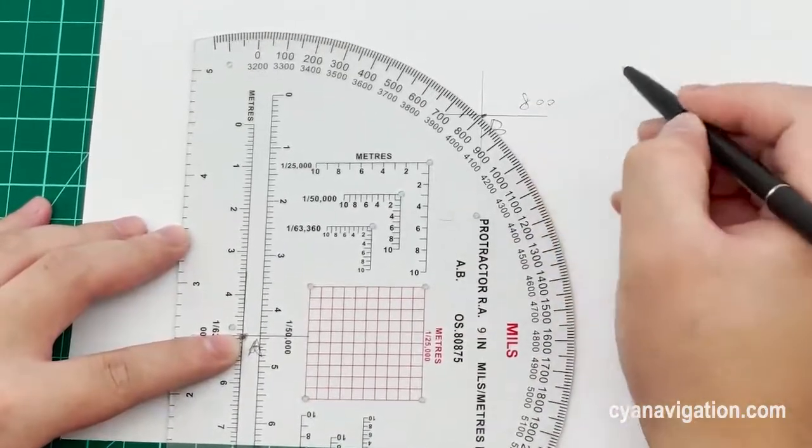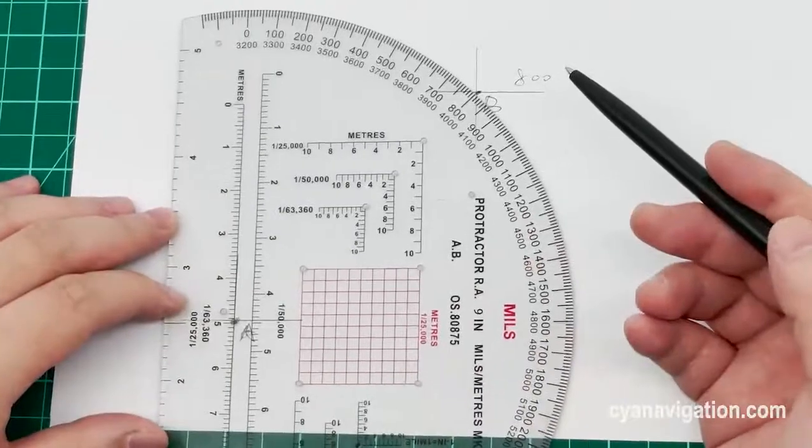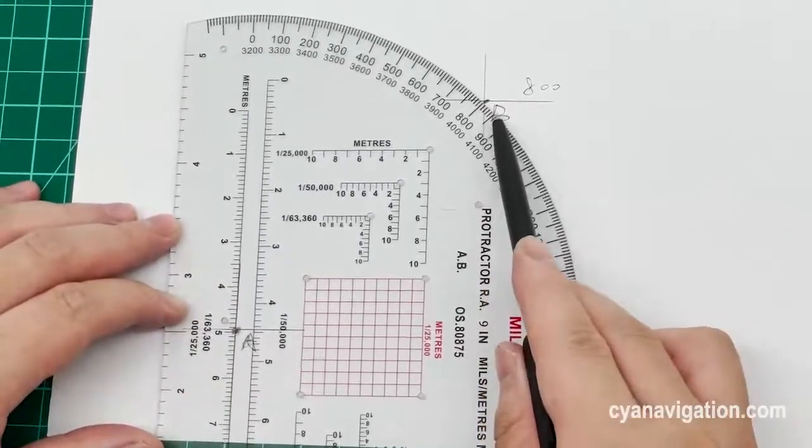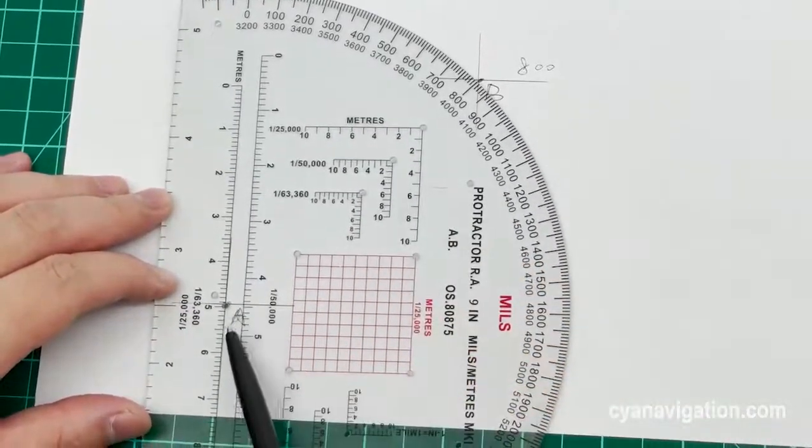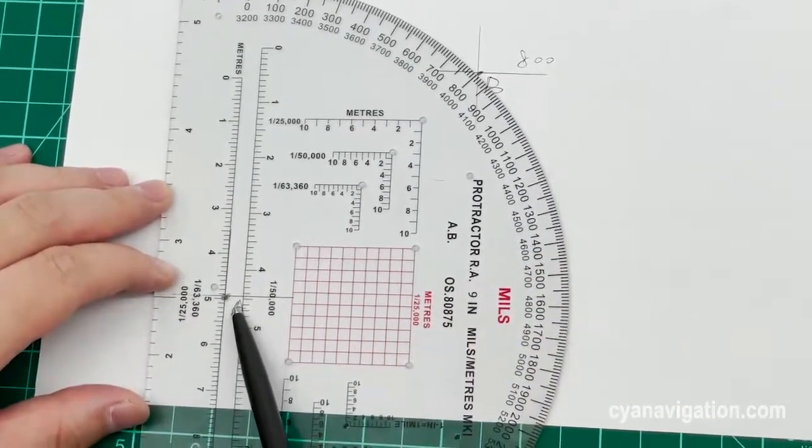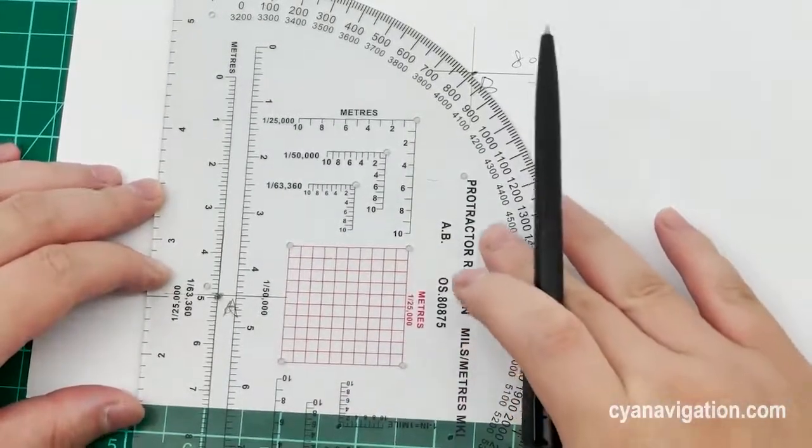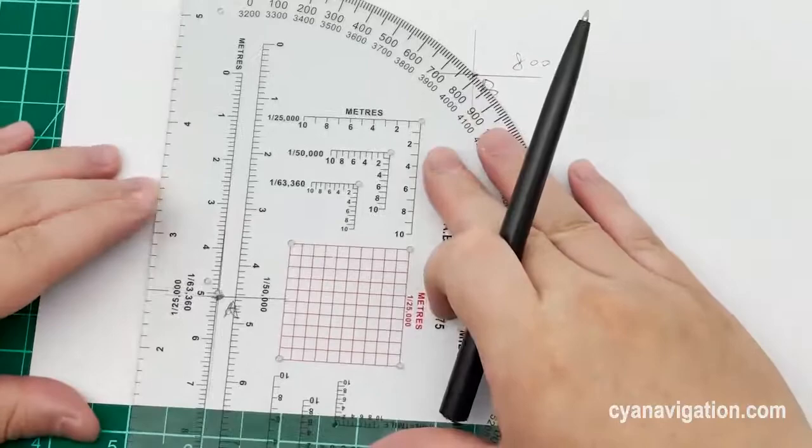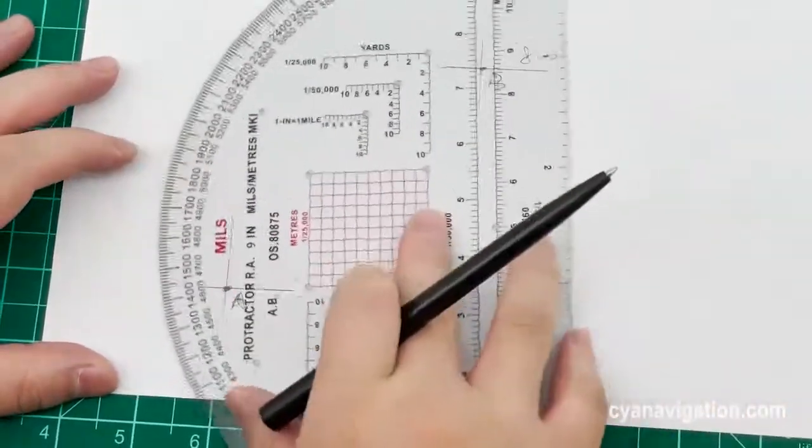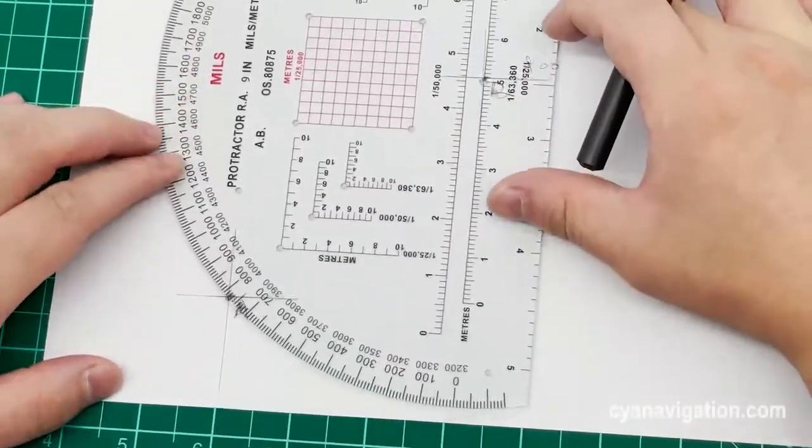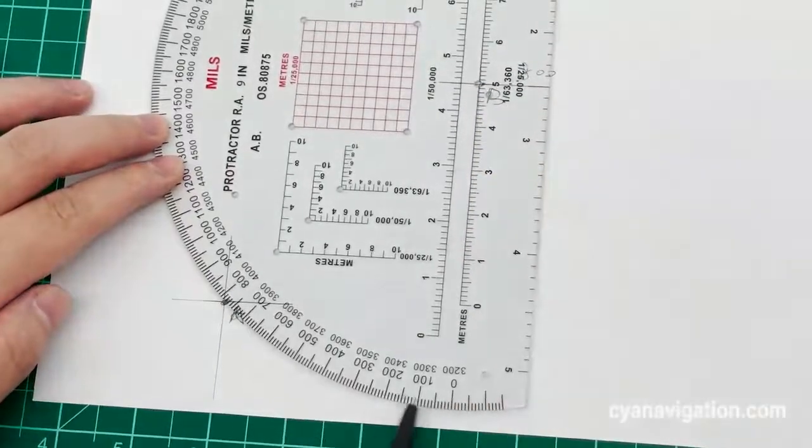If we check it back, setting point B as the departure point and point A as the destination point, what will be the data? We can just rotate this protractor and set the point here.